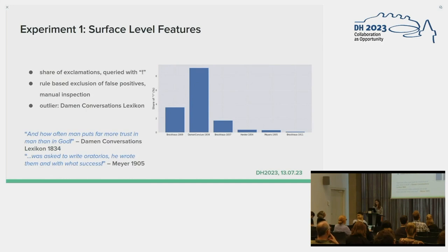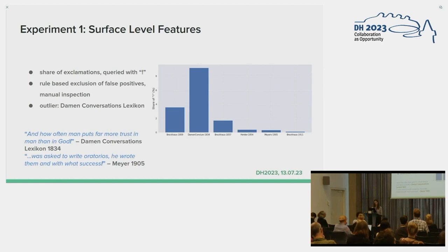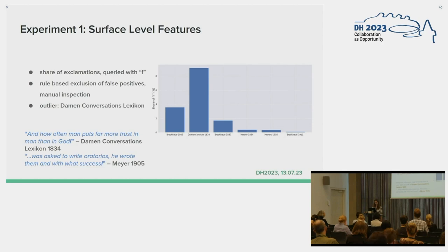The second feature we were interested in were exclamations, which may suggest emotion and expressiveness. We tried to exclude any false positives and did a manual inspection of the results. We have a clear outlier, which is again the women's encyclopedia, which could be an indication of the intended liveliness that was intentionally woven in by the editor. Apart from that, we also again see a steady decline of this feature. Some examples: 'How often man puts far more trust in man than God!' or 'He was asked to write Horatius, he wrote them — and with what success?'